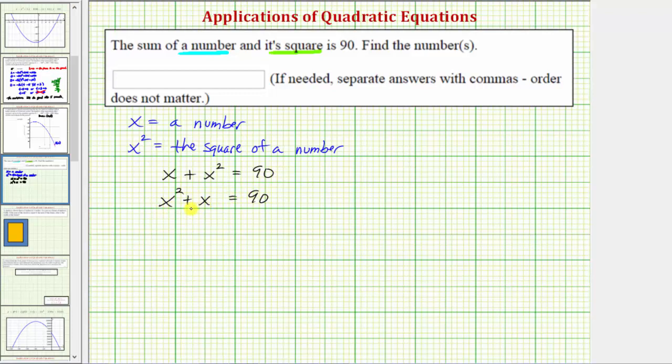Let's try to solve this equation by factoring. So we'll set it equal to zero by subtracting 90 on both sides of the equation. So simplifying, on the left side we have x squared plus x minus 90 equals 90 minus 90 is zero.